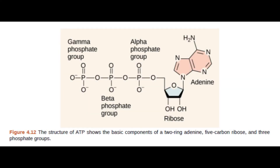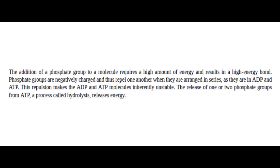Figure 4.12: The structure of ATP shows the basic components of a 2-ring adenine, 5-carbon ribose, and 3 phosphate groups. The addition of a phosphate group to a molecule requires a high amount of energy and results in a high-energy bond. Phosphate groups are negatively charged and thus repel one another when they are arranged in series, as they are in ADP and ATP. This repulsion makes the ADP and ATP molecules inherently unstable. The release of one or two phosphate groups from ATP, a process called hydrolysis, releases energy.